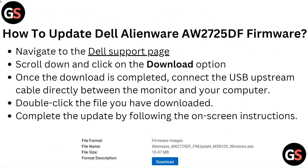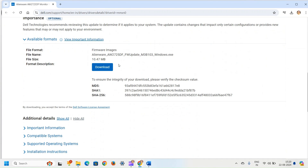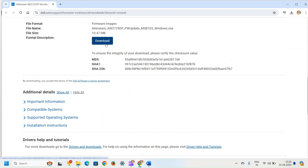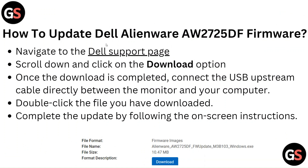How to update Dell Alienware AW2725DF firmware: Navigate to the Dell Support page, scroll down and click on the Download option. Once the download is completed, connect the USB upstream cable directly between the monitor and your computer. Double-click the file you have downloaded and complete the update by following the on-screen instructions.